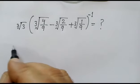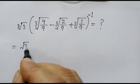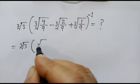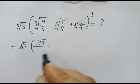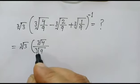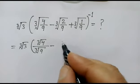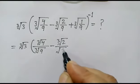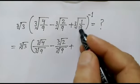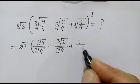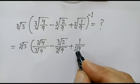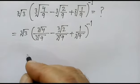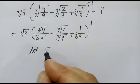Let's start. We will break this as cube root of 4 over cube root of 9, minus cube root of 2 over cube root of 9, plus 1 over cube root of 9, whole power minus 1. Let's suppose cube root of 3 is equal to a.